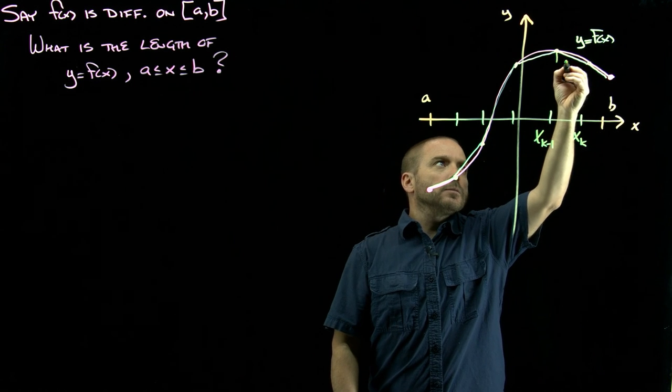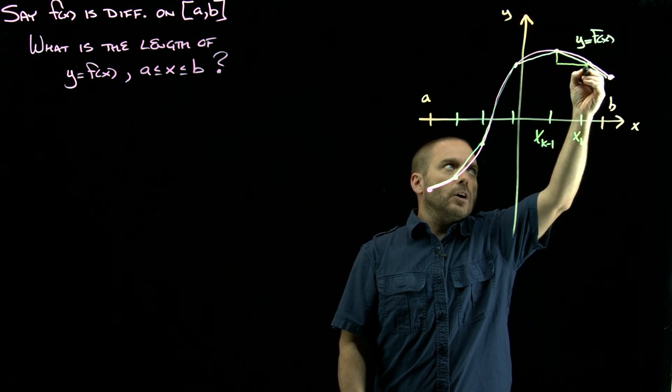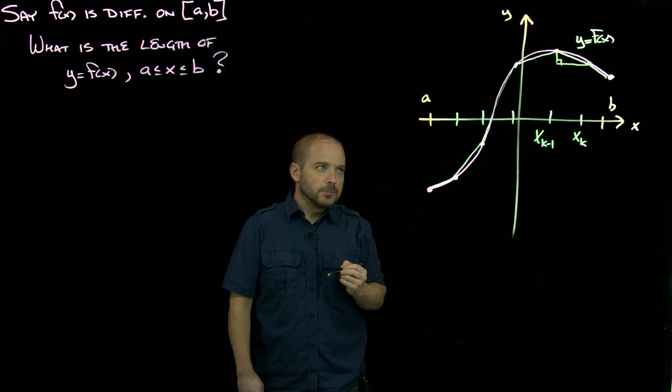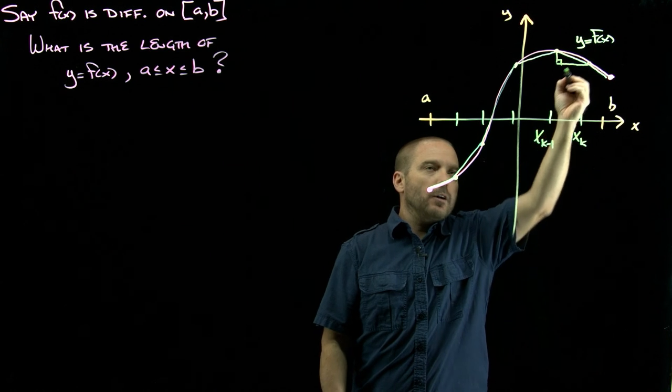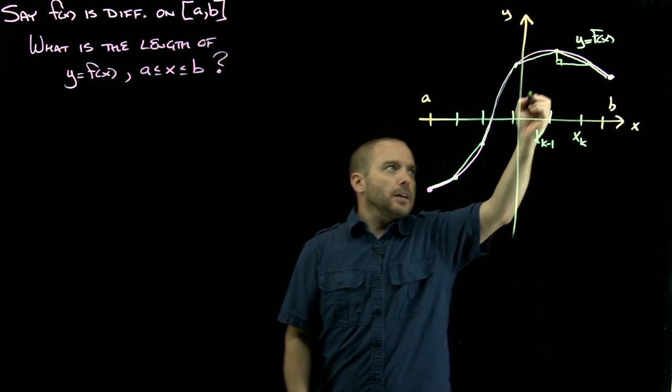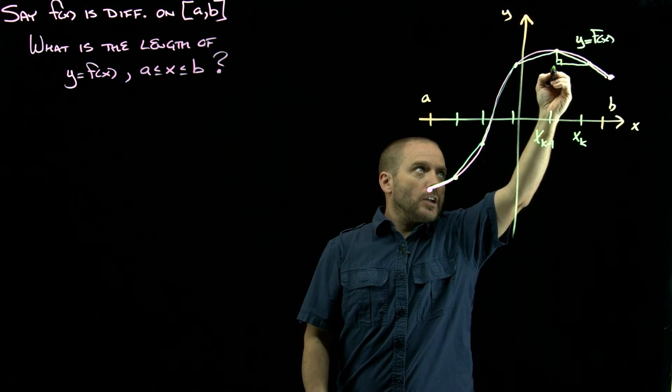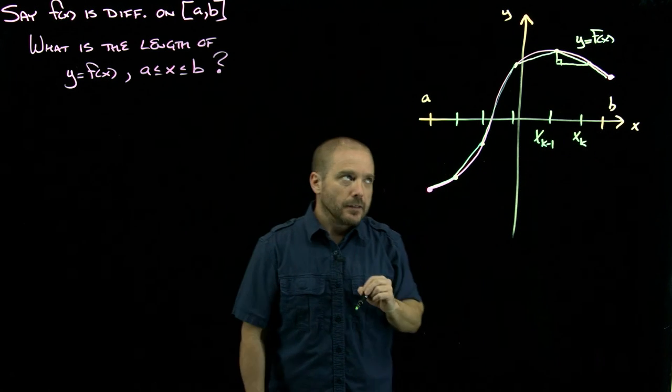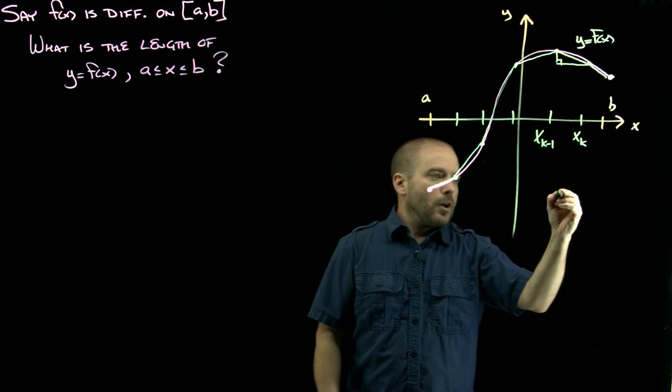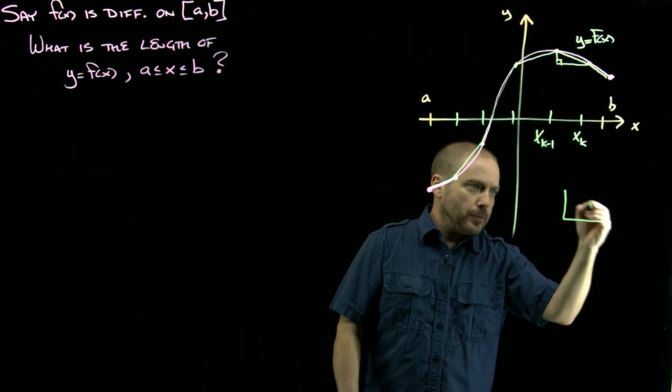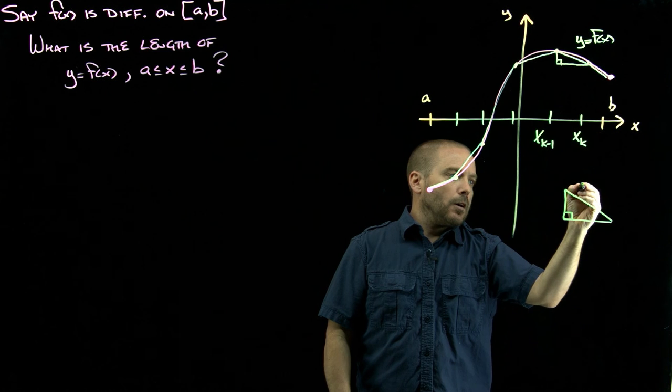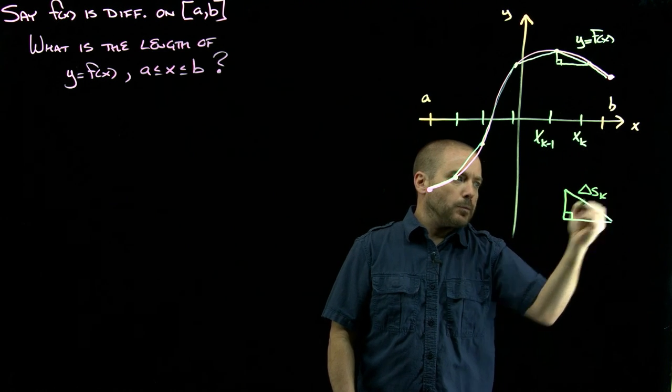What I'm going to do is draw a little right triangle there. What we're interested in is the length of the hypotenuse of that right triangle. The reason I do that is that's going to relate our change in x and our change in y to the length of that line segment, and we know how to do that by Pythagoras. Let's redraw that right here. That hypotenuse I'm going to call delta s sub k.